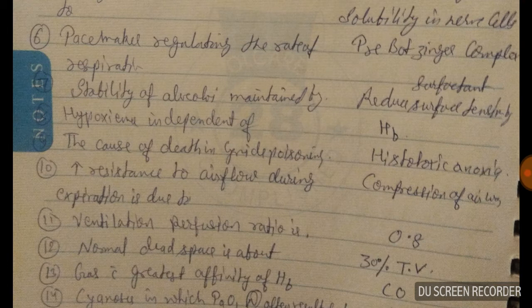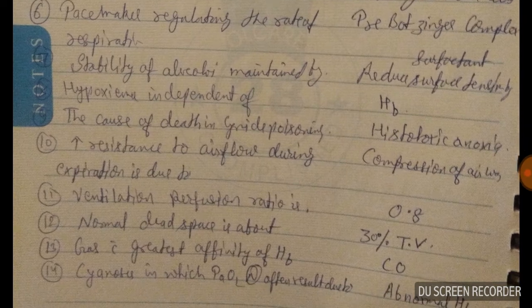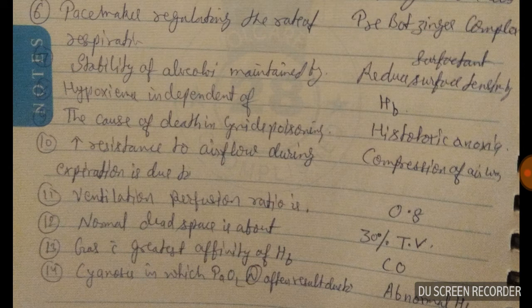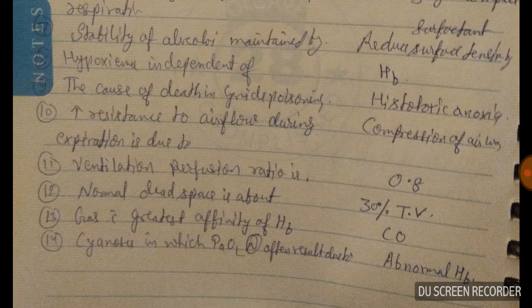Question number nine: the cause of death in cyanide poisoning is histotoxic anoxia. Question number ten: increased resistance to airflow during expiration is due to compression of airflow. Question number eleven: the ventilation-perfusion ratio is 0.8. Question number twelve: normal dead space is about 30 percent of tidal volume.